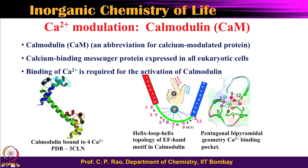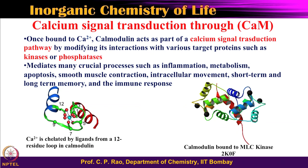So, calcium binds to calmodulin in a pentagonal bipyramidal structure, and the calmodulin in turn interacts with and activates various enzymes. Once calcium 2+ is bound to calmodulin, it becomes part of the signal transduction pathway. The calcium introduces the signal transduction pathway by modifying its interactions with various target proteins — kinases and phosphatases.